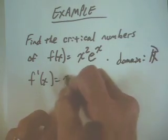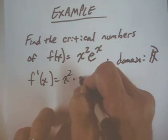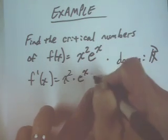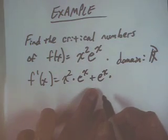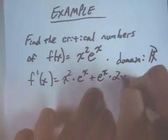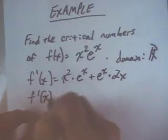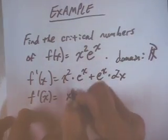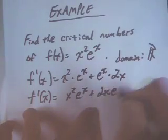So, we'll say x² times the derivative of e^x, which is just e^x, plus e^x times the derivative of x². What's the derivative of x²? 2x. So, we see that the derivative of f is equal to x² e^x + 2x e^x.